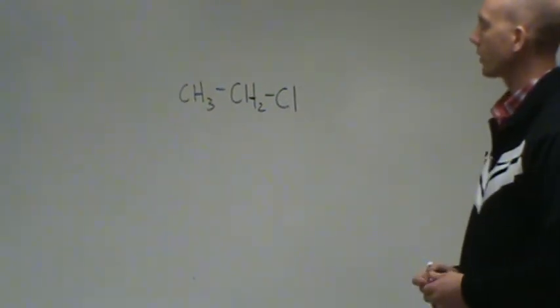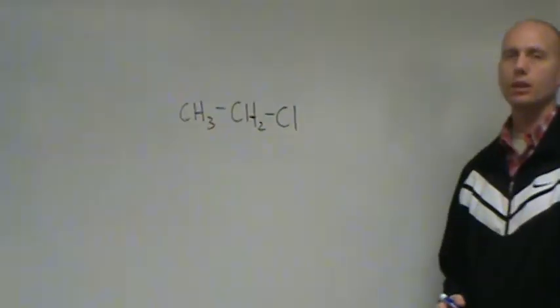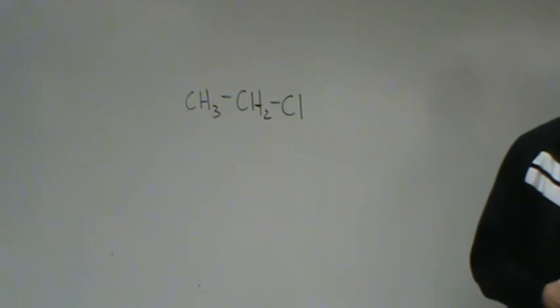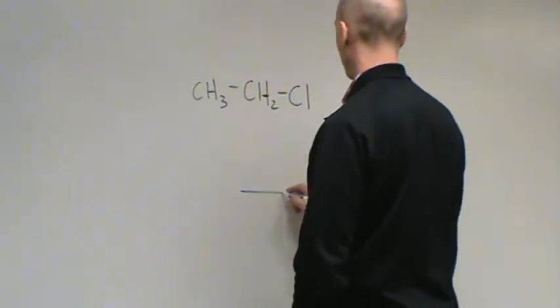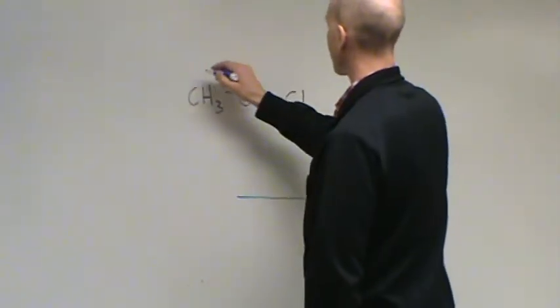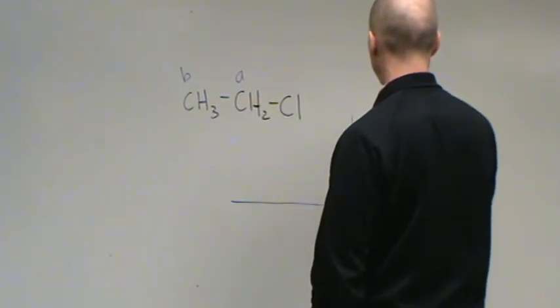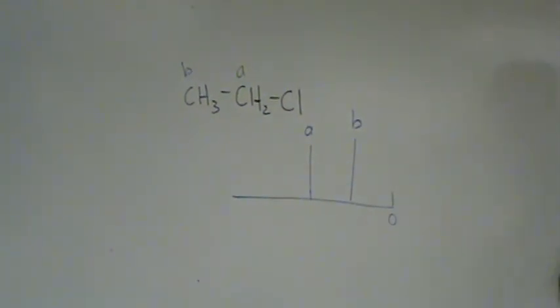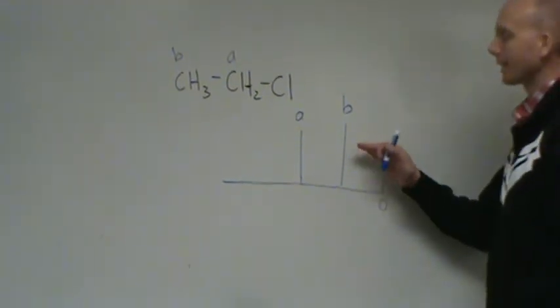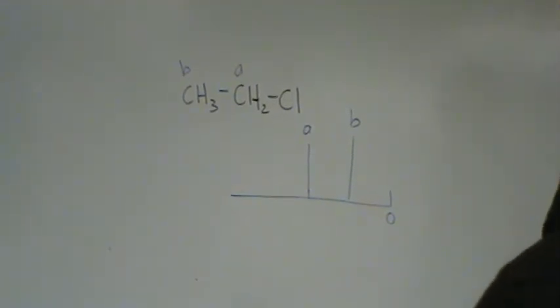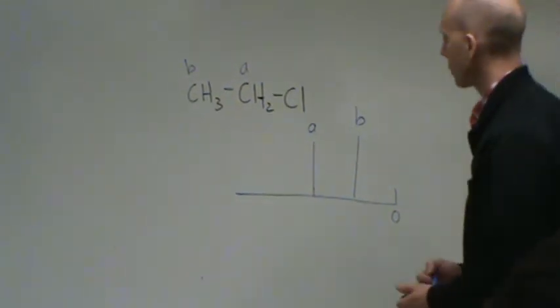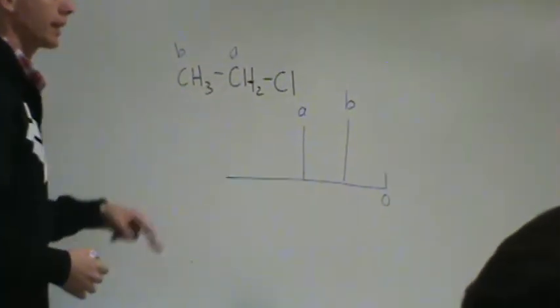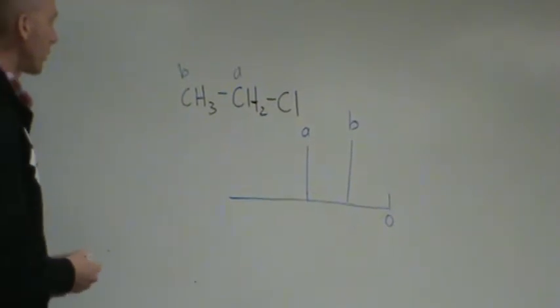Here, the hydrogens on a carbon split the signal. And what we're going to do is, again, use the N-plus-1 rule. Let's take a look at an example of this. Let's use our friend here, chloroethane. If we were focusing on the C-13, we have two different carbon atoms, so you'd expect to see two different signals.